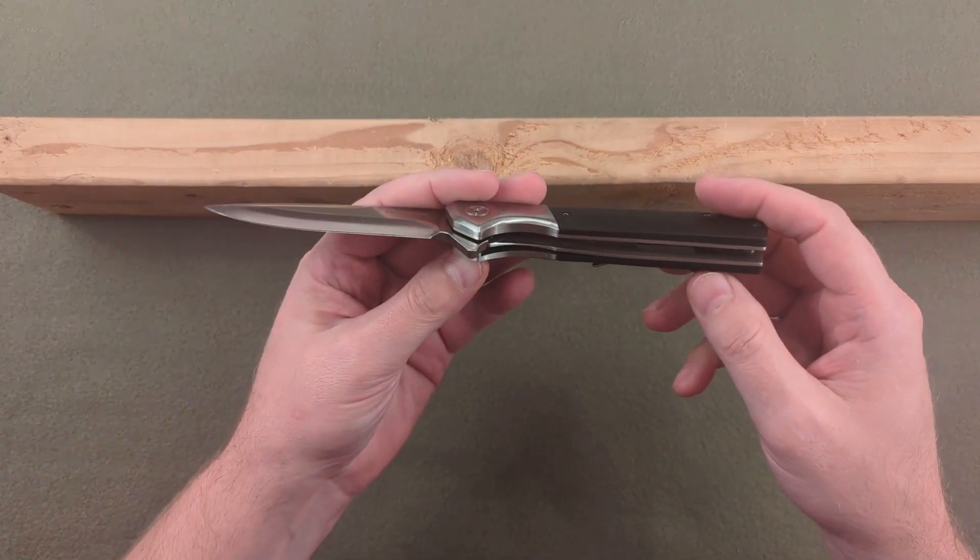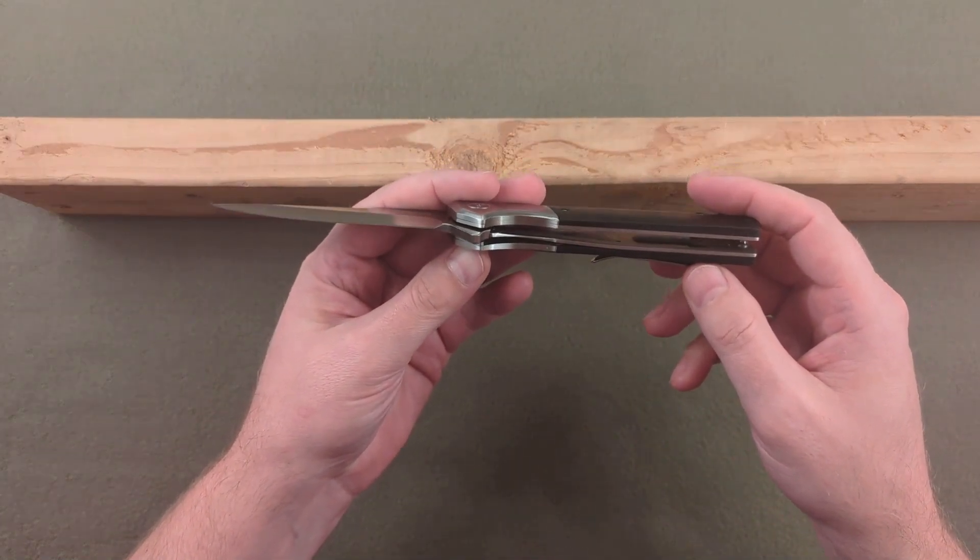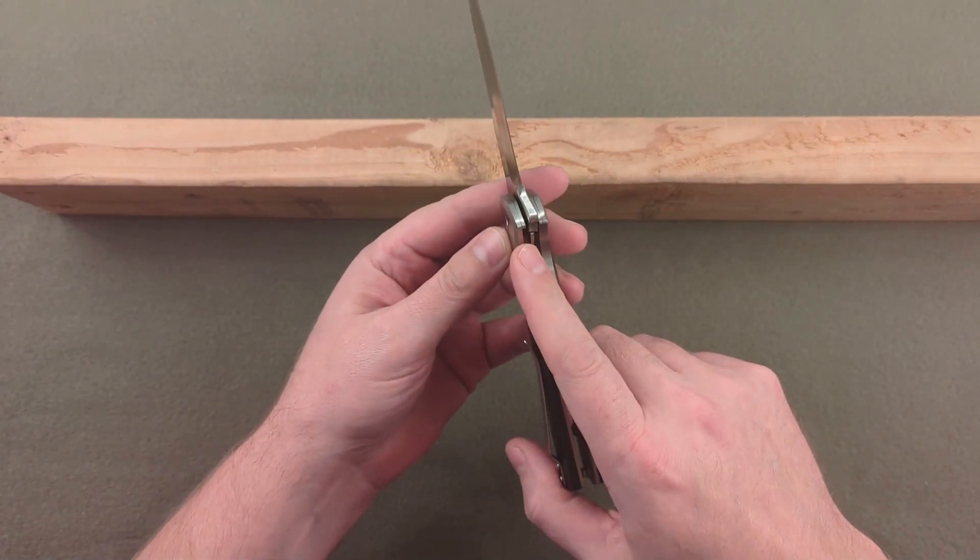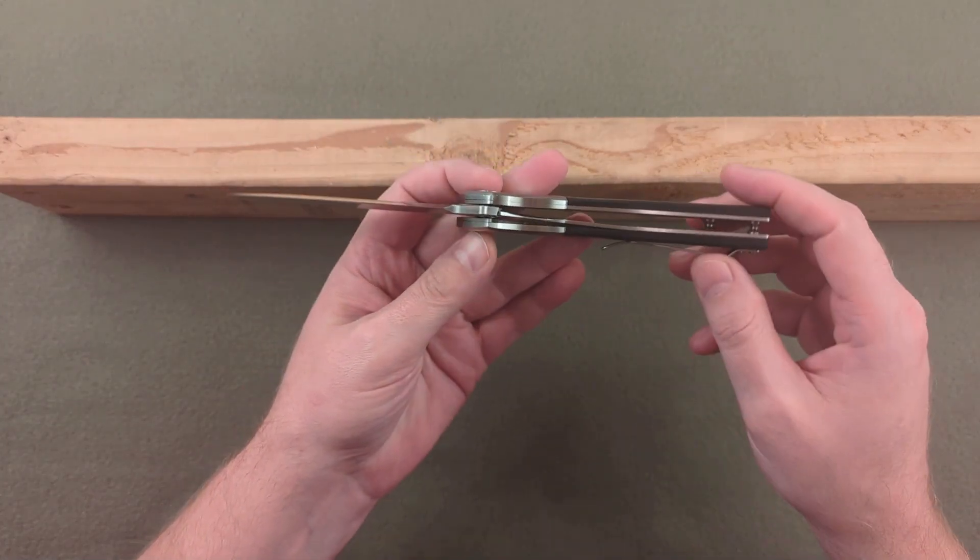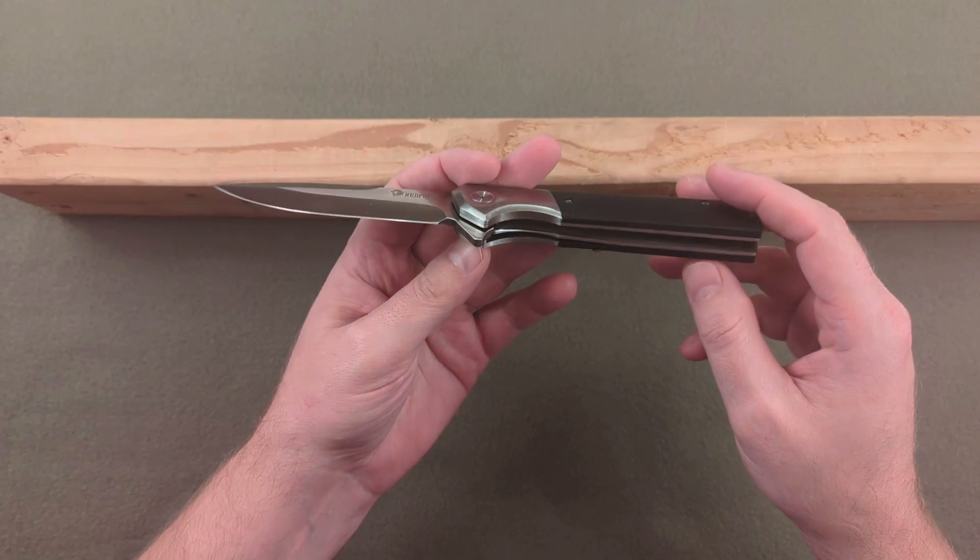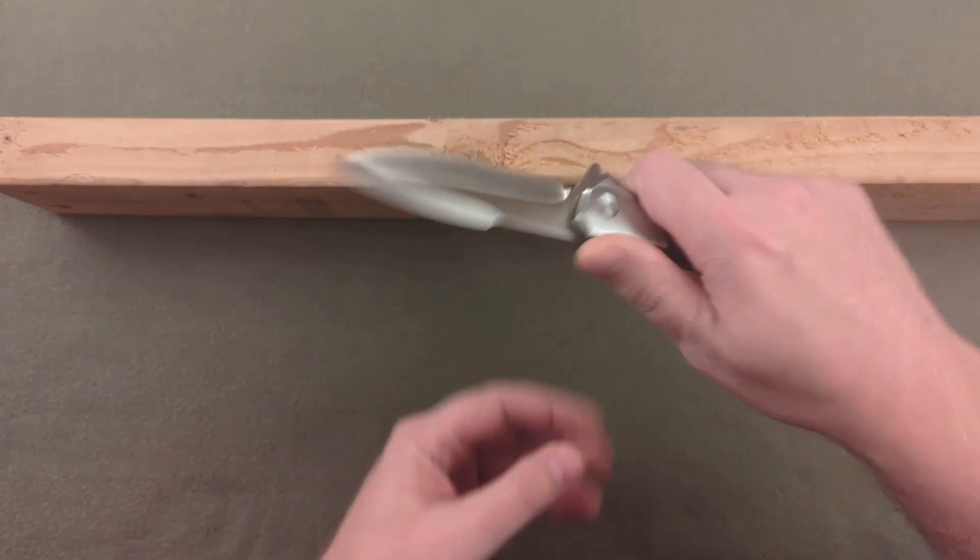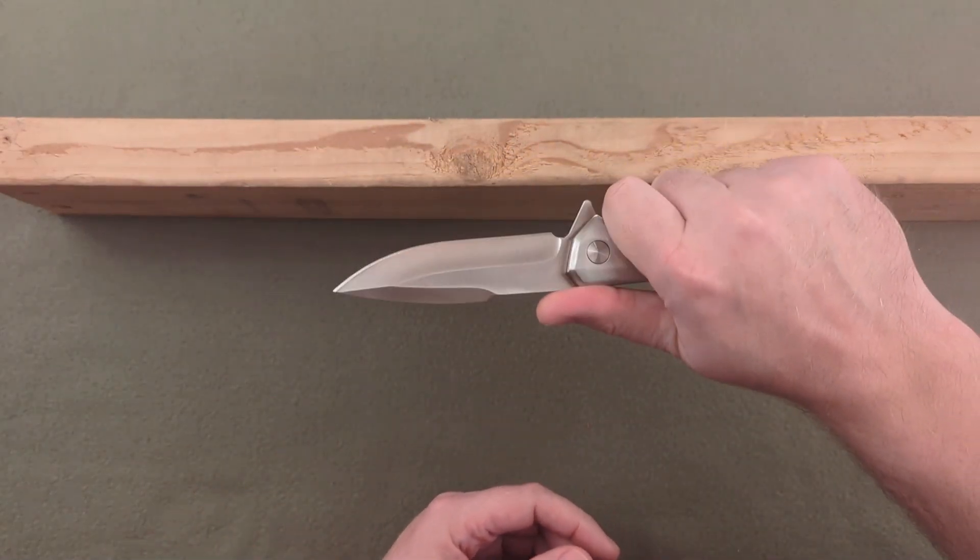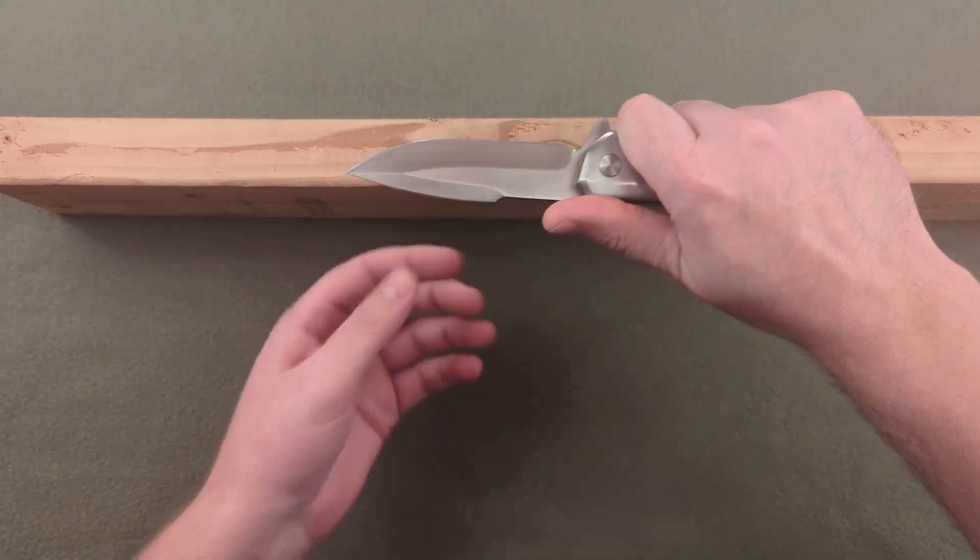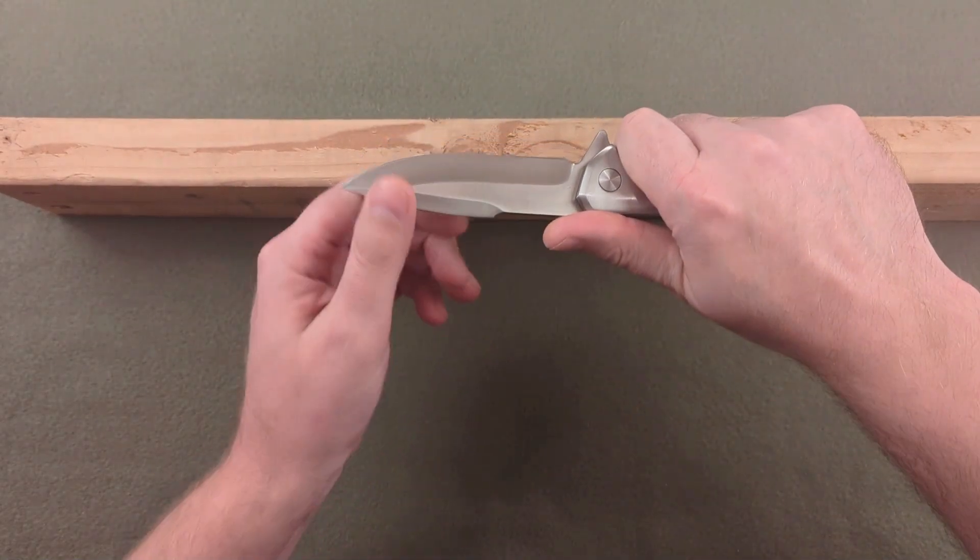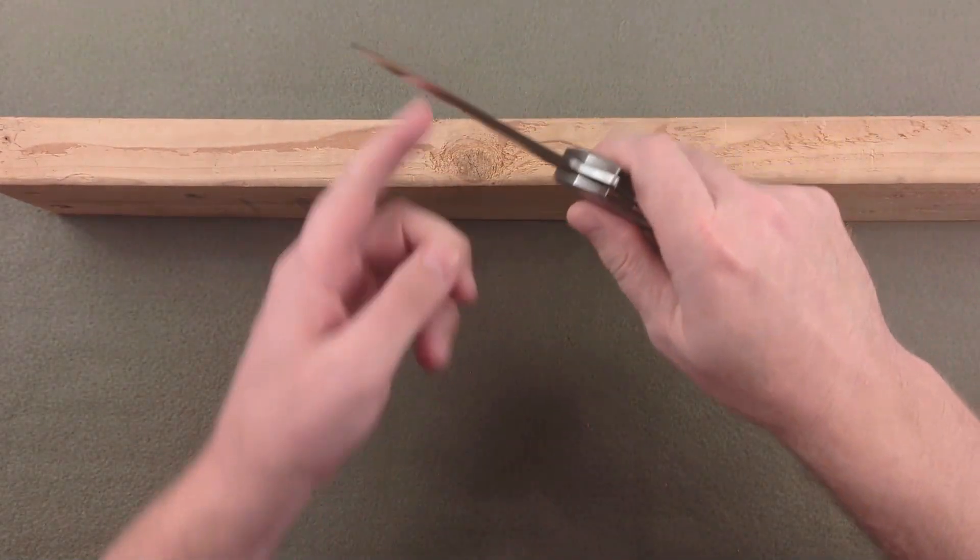Now, I'm not trying to destroy this knife. Usually when I'm checking a lock just to see if it engages well, some light spine whacks is all I'm going to do because realistically, when you're using this knife anytime in regular use, you're going to be pushing pressure back against the edge. You're not going to be pushing it this way.